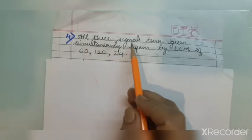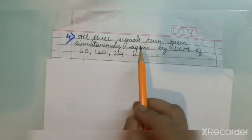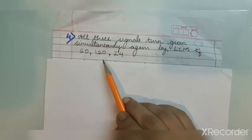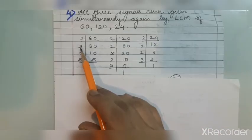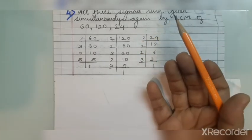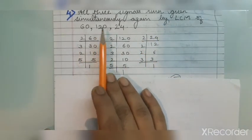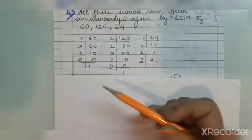All 3 signals will turn green simultaneously again after finding the LCM of 60, 120, and 24. We use the factor method, though you can also use the multiples method by writing the multiples of 60, 120, and 24 and finding the least common number. For the factor method: 60 is divisible by 2, 3, and 5, all prime numbers.